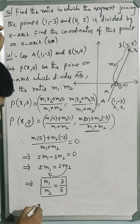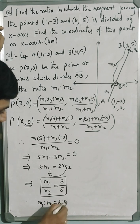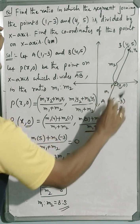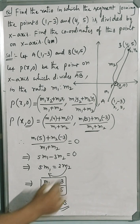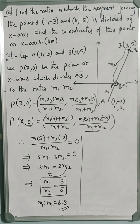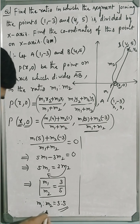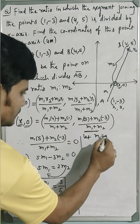So AP : PB = 3 : 5. Now we have to find the coordinates of P(x, 0). Since the ratio m1 : m2 = 3 : 5, let m1 = 3k and m2 = 5k. From the section formula, the x-coordinate is equal to (4m1 + 1·m2)/(m1 + m2).